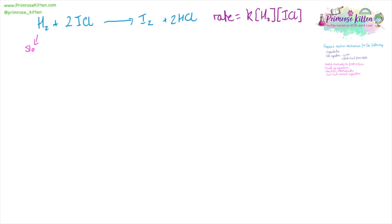In the rate equation for this example, we have hydrogen and ICL. So we can see that one ICL is in a fast step, and one is in the slow step. This makes it nice for us to start building up the equations. So our slow step is going to be H2 plus ICL, and our fast step is going to have ICL with an intermediate.